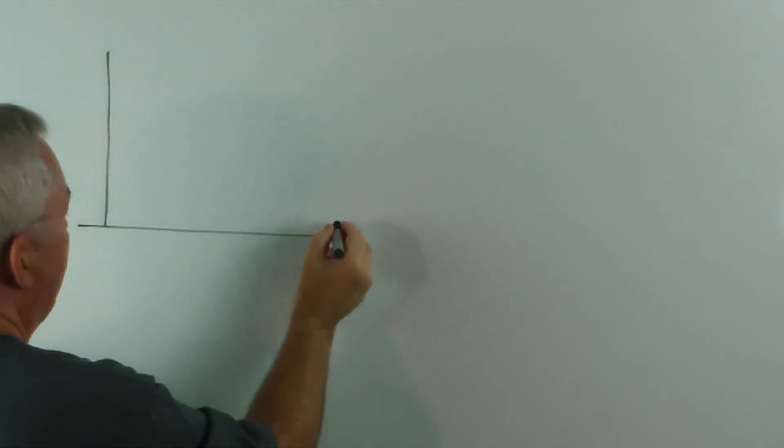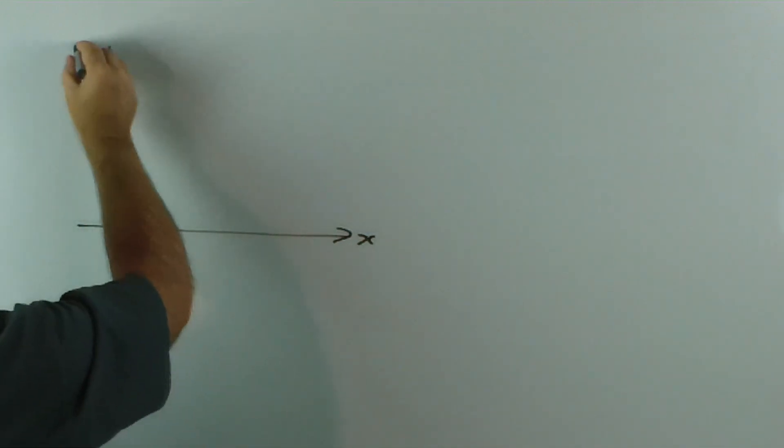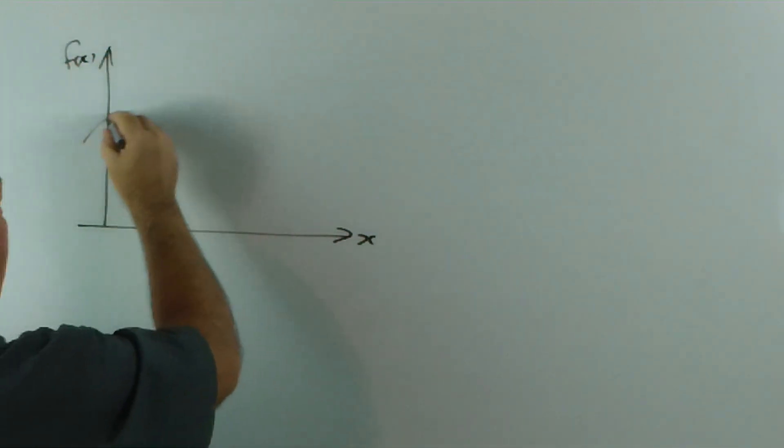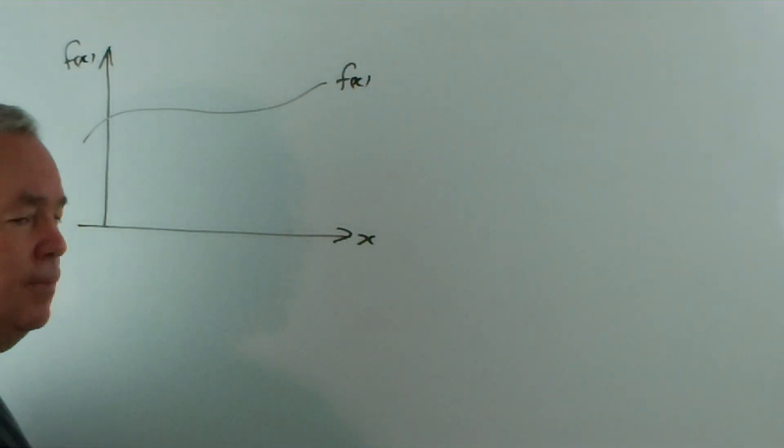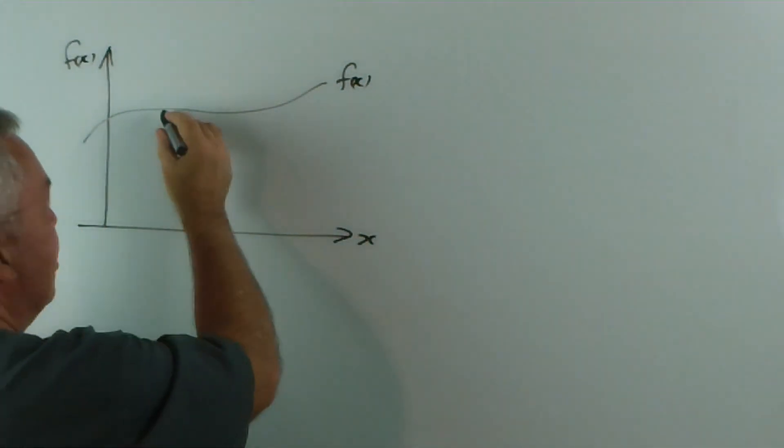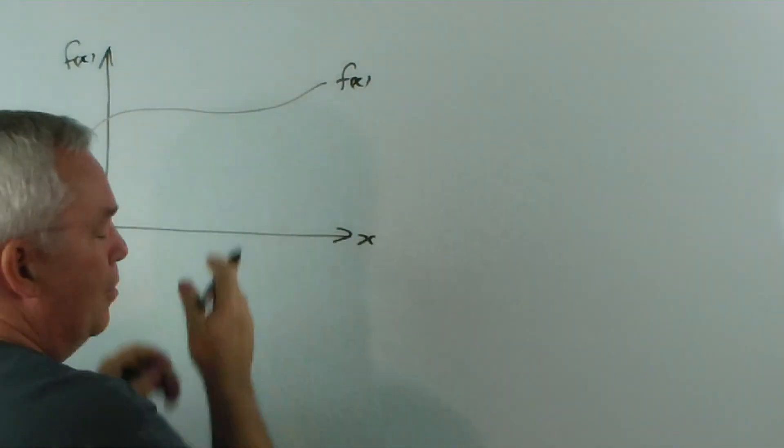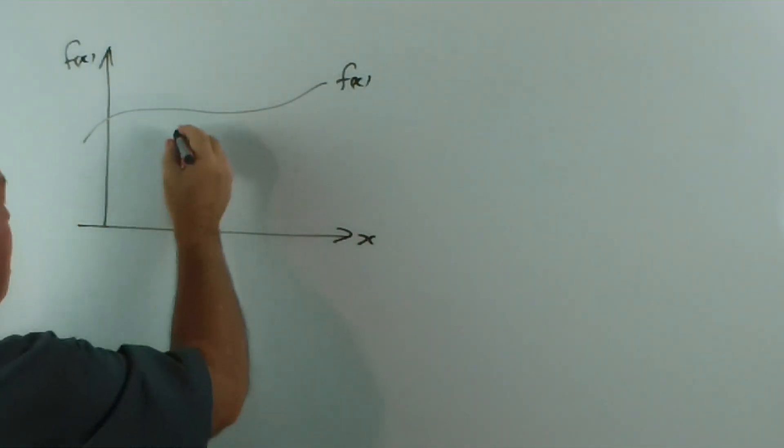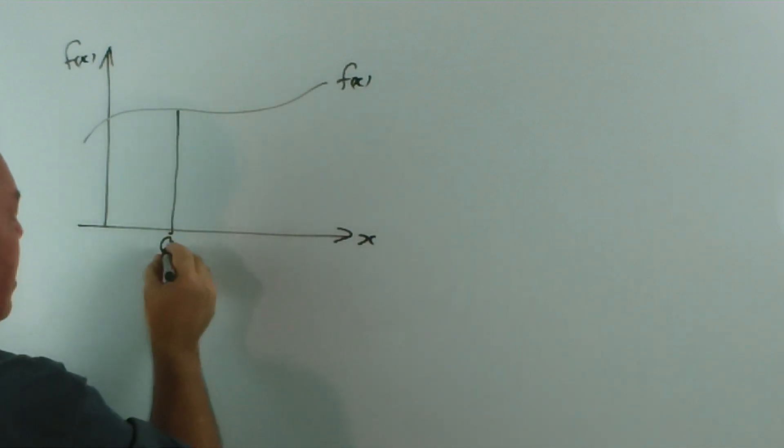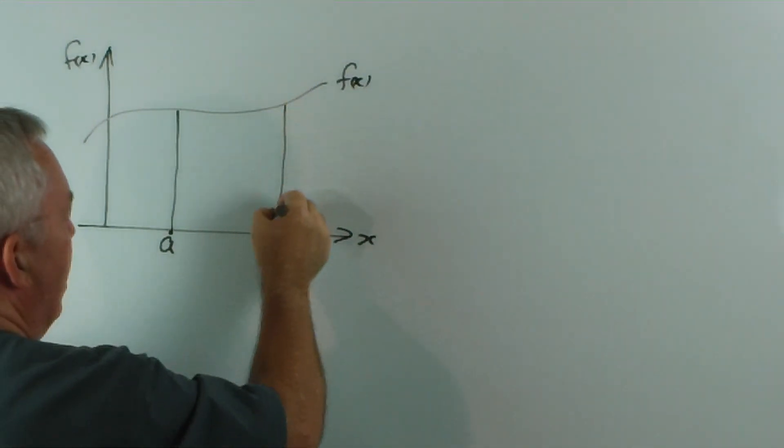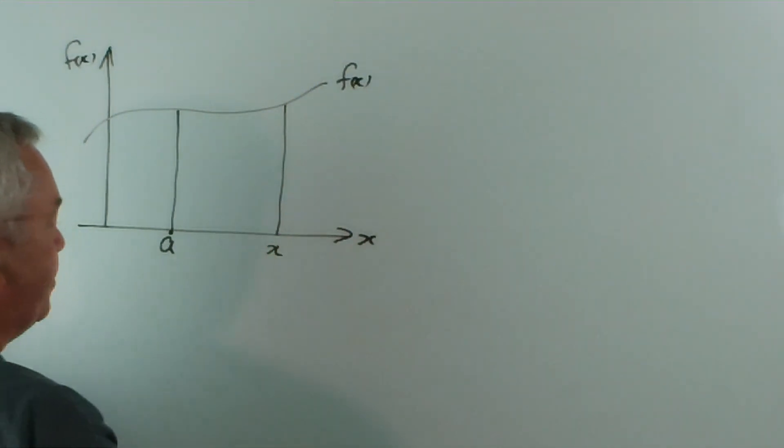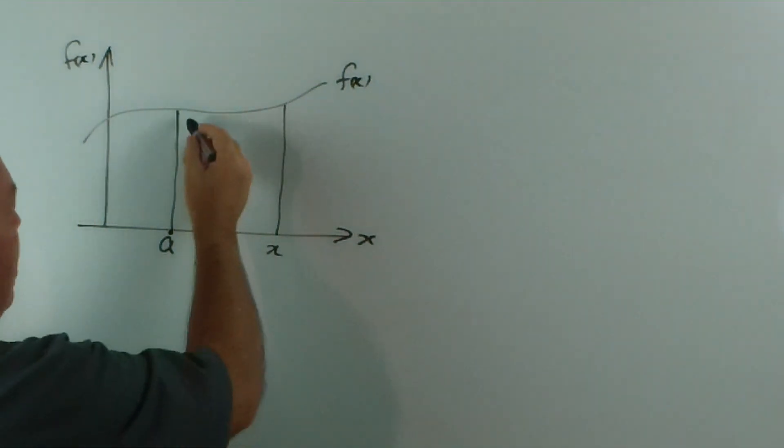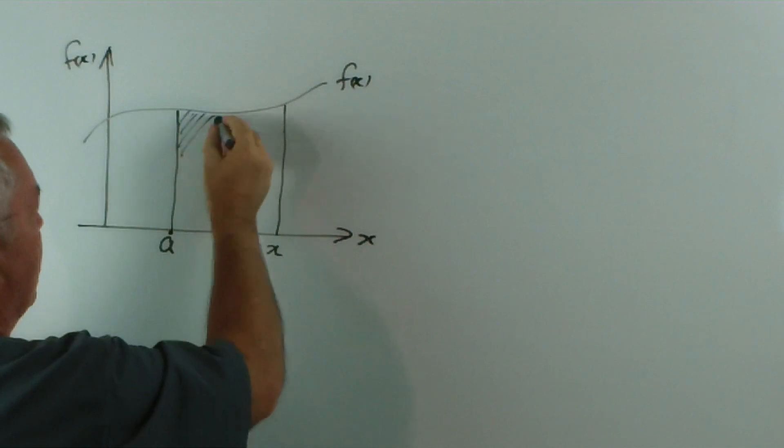Now, this is how it came about. If we imagine that we have some function of x graphed, and that it is continuous, at least over a particular range, a particular domain. Let's choose the lower bound of A, the lower boundary there, and let's choose an upper boundary and just call it x. We're going to discuss, first of all, the area under the curve.